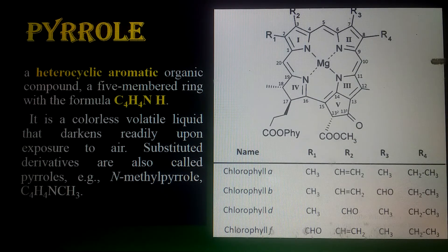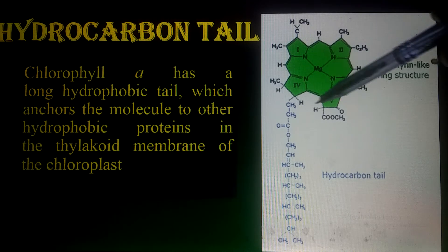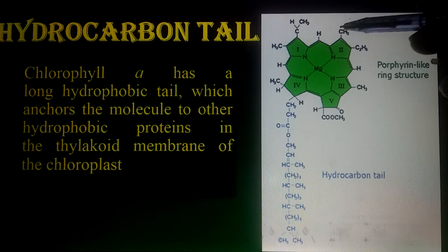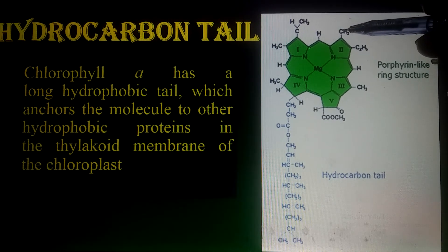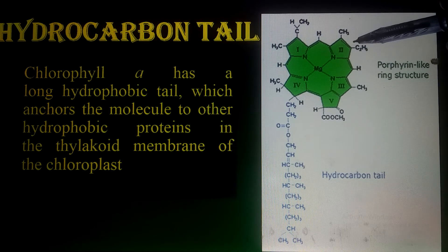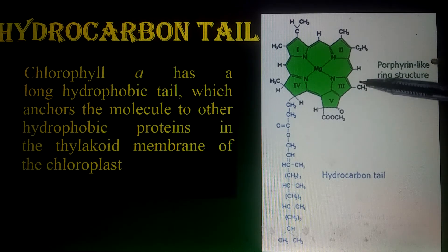Note down chlorophyll d and f as well. Now, looking at the hydrocarbon tail — you can see the structure of chlorophyll a here. How can you identify it? Because at the R3 group there is a methyl group present. If there is an aldehyde group present, you can identify it as chlorophyll b. This is chlorophyll a because of the presence of the methyl group at R3.